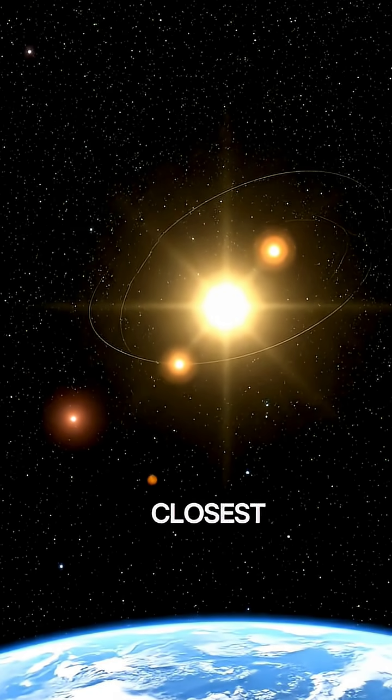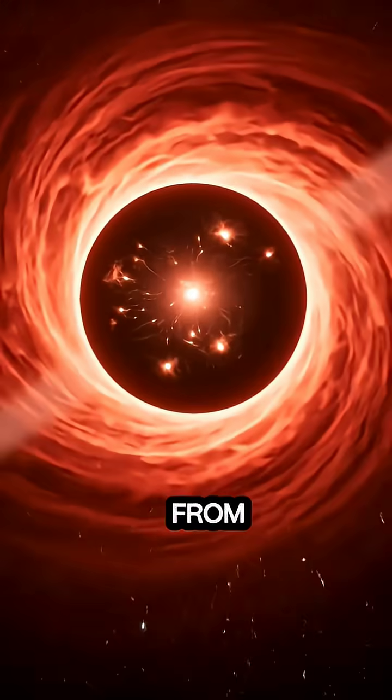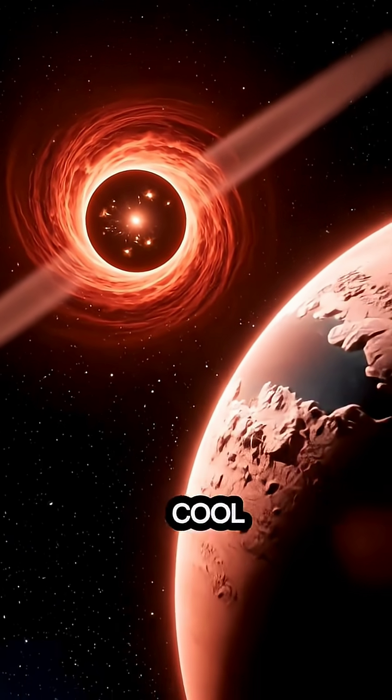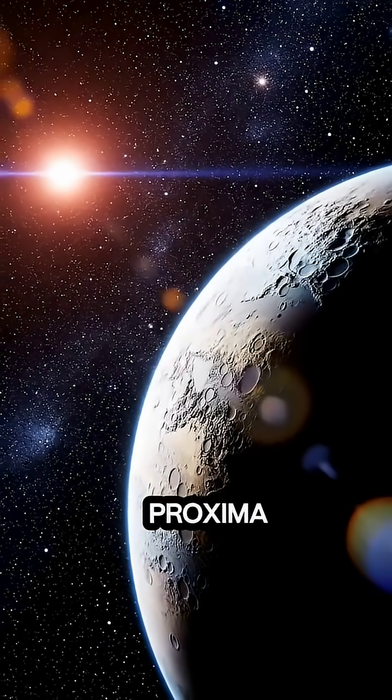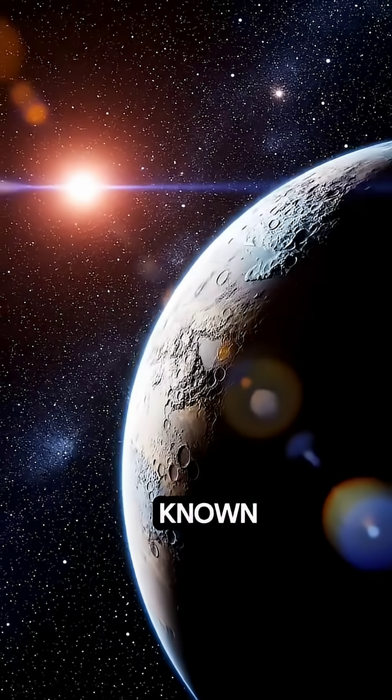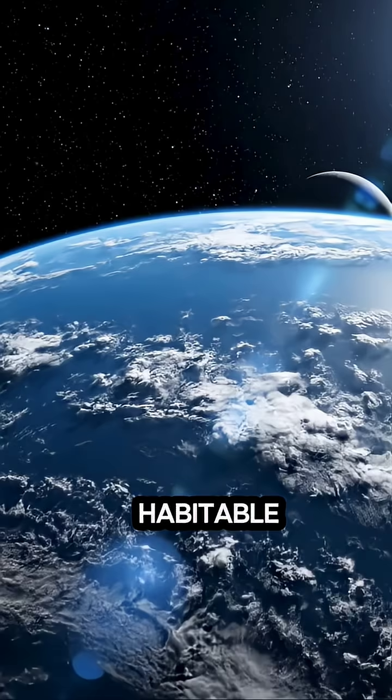The closest is Proxima Centauri. About 4.24 light years from Earth. A small, cool red dwarf star. Orbiting it is Proxima b. The nearest known exoplanet. Possibly rocky and located within its star's habitable zone.